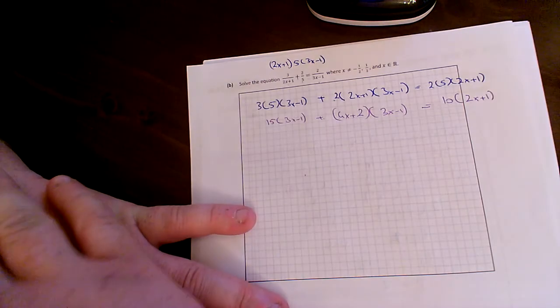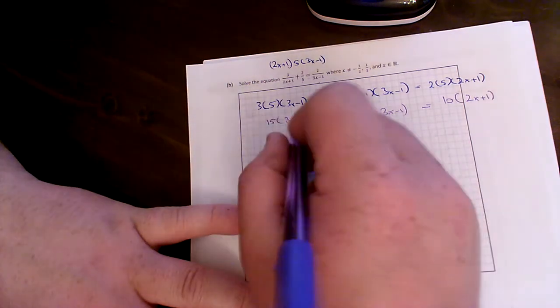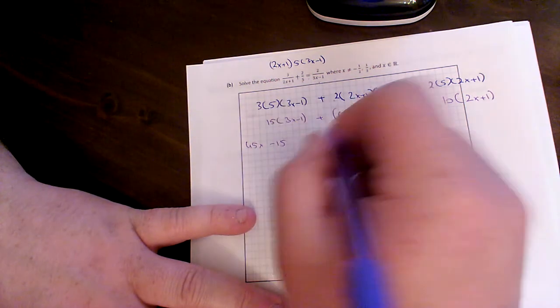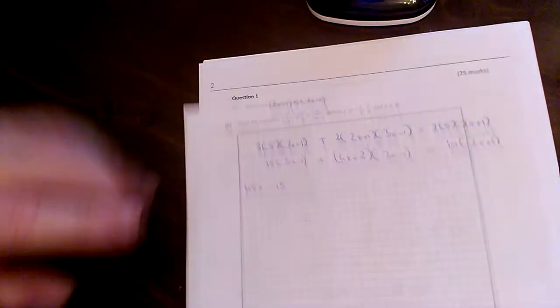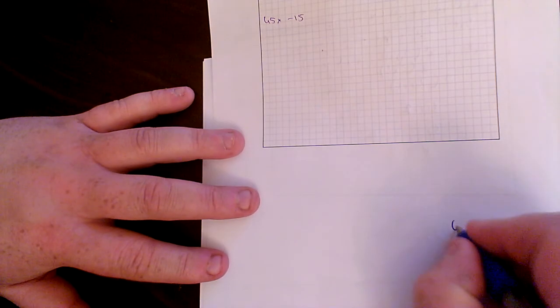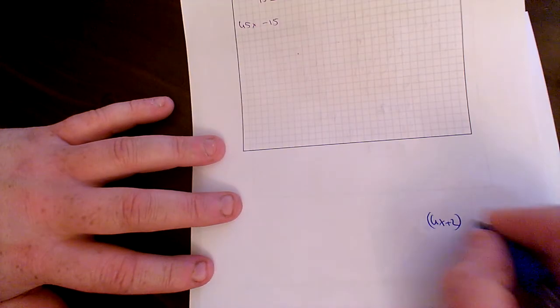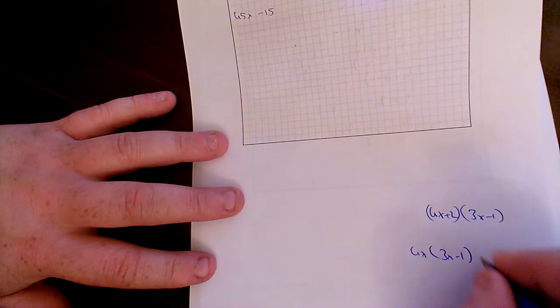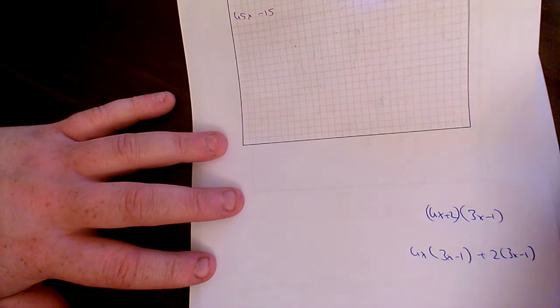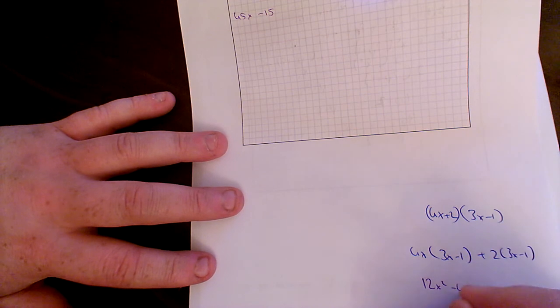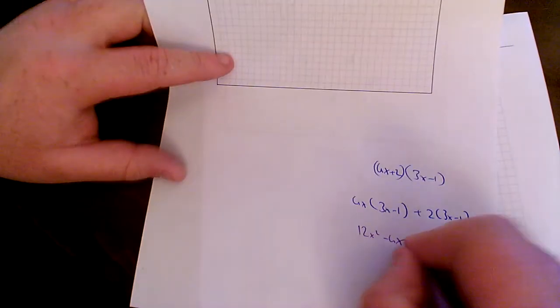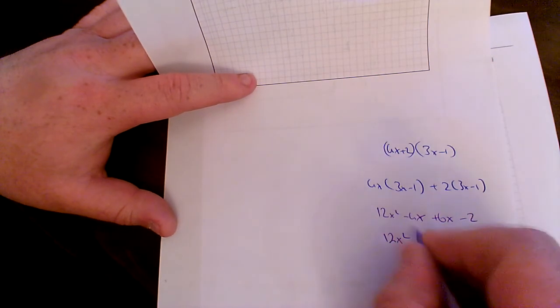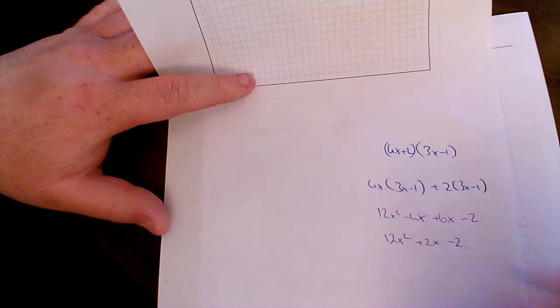We're going to multiply the 2 by the 2x plus 1. 2 by 2x is 4x plus 2 by 1 is 2. Open bracket 3x minus 1. Is equal to 2 by 5 is 10 open bracket your 2x plus 1. Now. Take your time. If you take your time, concentrate on what you're doing, won't be a problem. 15 by 3 is 45x. 15 minus 1 is minus 15. Plus. Now. You have to multiply this out. We're going to go down here to the bottom of the page. Bit of room. 4x plus 2 by 3x minus 1. That's 4x bracket 3x minus 1 and then plus 2 bracket 3x minus 1. Multiply that out. 12x squared minus 4x plus 6x and 2 by 1 is minus 2. That's 12x squared plus 2x minus 2.